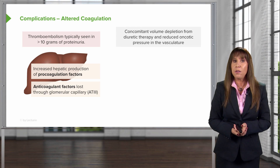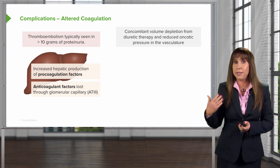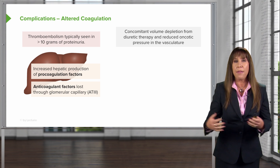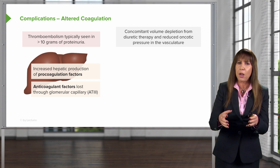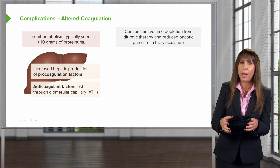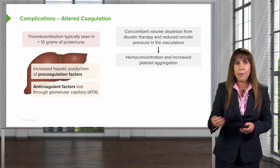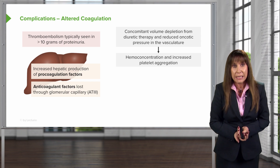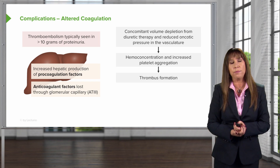Concomitant volume depletion — oftentimes that's iatrogenic from us giving our patients diuretic therapy — and that reduced oncotic pressure that they already have from hypoalbuminemia in their vessels leads to hemoconcentration and increased platelet aggregation, so you finally end up with thrombus formation.